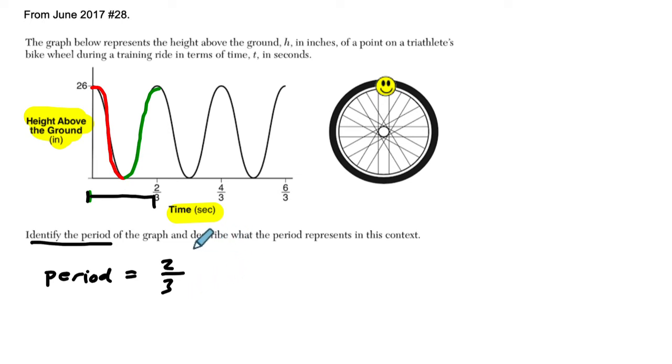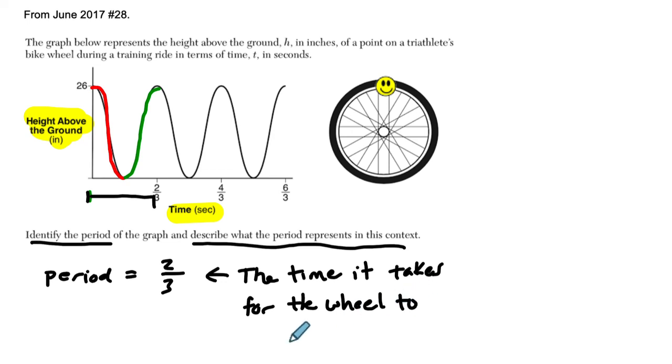And when you describe what it represents in this context, you could say this describes one rotation of the wheel, or the time, right? This is the time it takes for the wheel to complete one rotation. To complete one rotation.